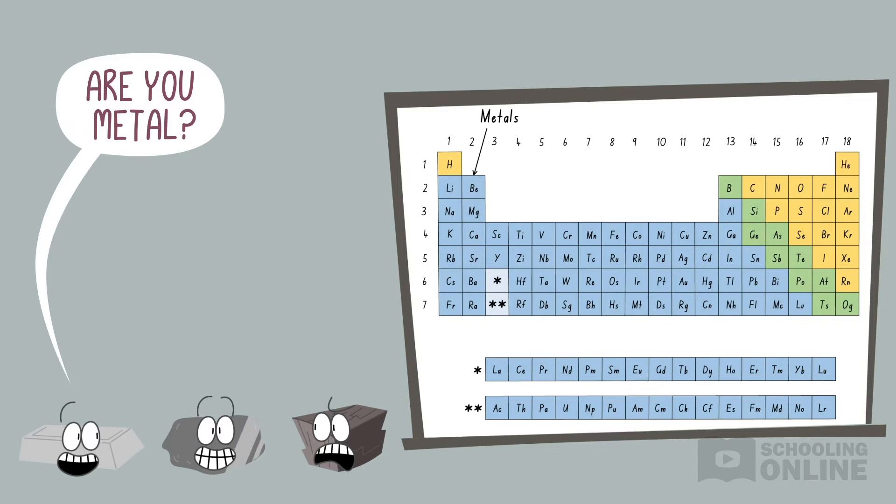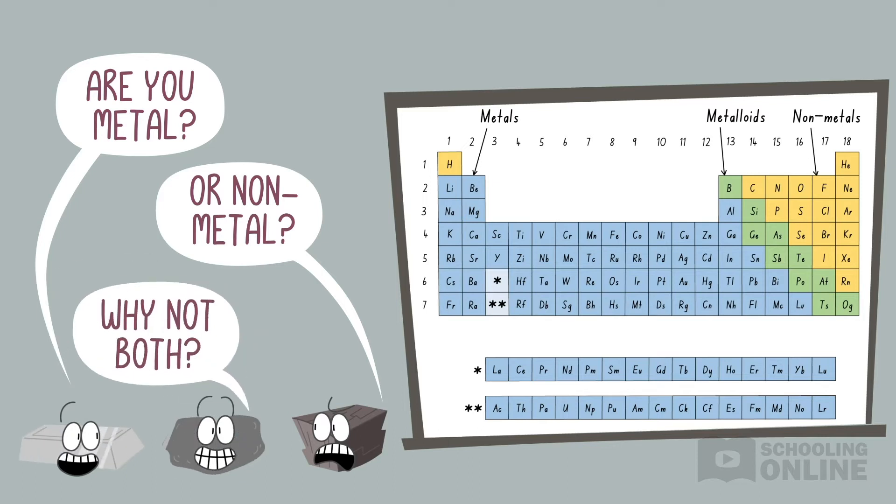Metals form the majority of the elements, while non-metals appear on the far right-hand side of the periodic table. The metalloids form a diagonal staircase, and their characteristics are a mixture between those of metals and non-metals.